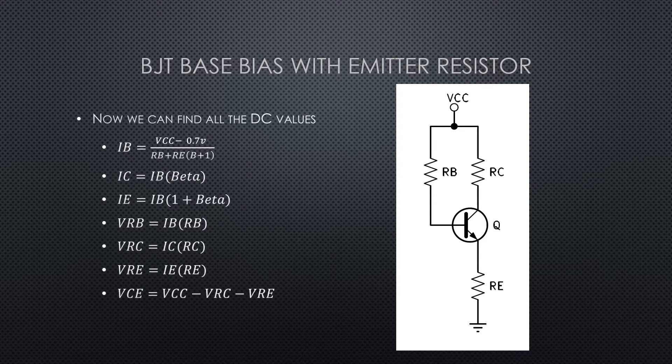Now that I have IB, I can quickly find IC and IE, I can find VRB, VRC, and VRE. I can do another Kirchhoff loop equation through VCE using the RC and RE side and find the equation for VCE. So VCE equals VCC minus VRC minus VRE.